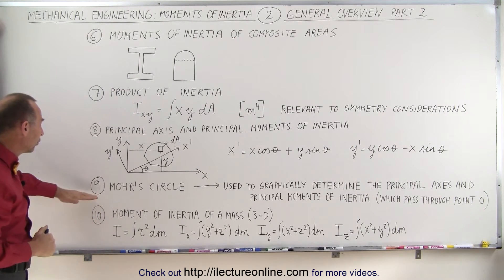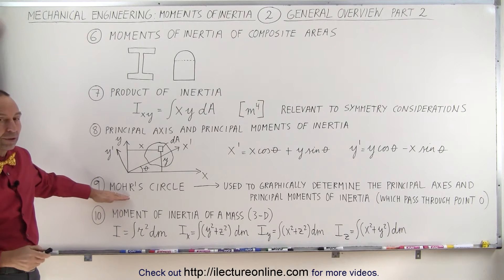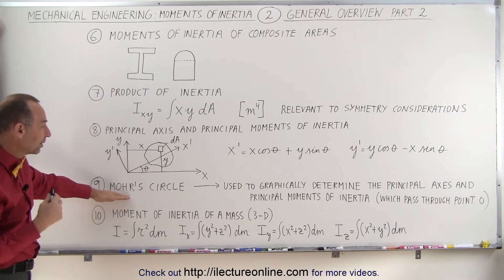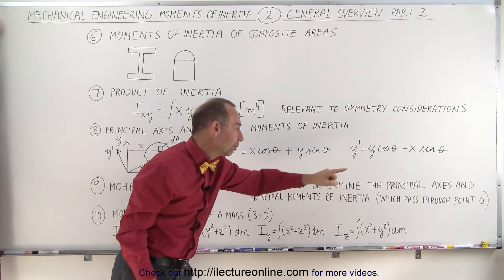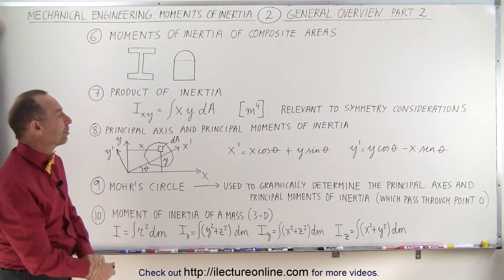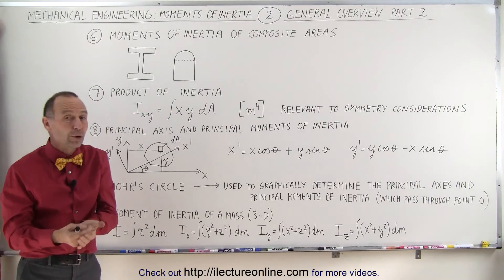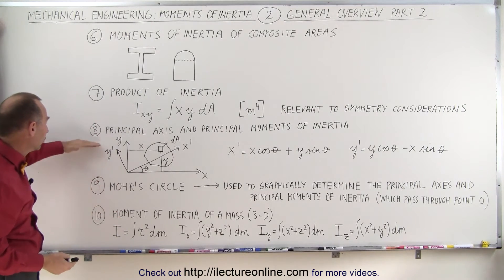Next we're going to learn how to use Mohr's circle. A German engineer who came up with this brilliant technique so that we can graphically determine the principal axis and principal moments of inertia which pass through point O. So it's related here to point eight.